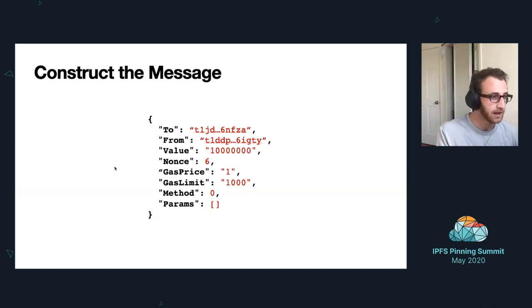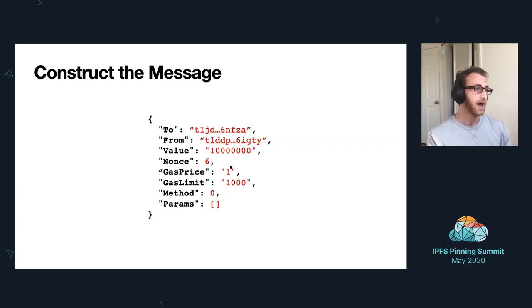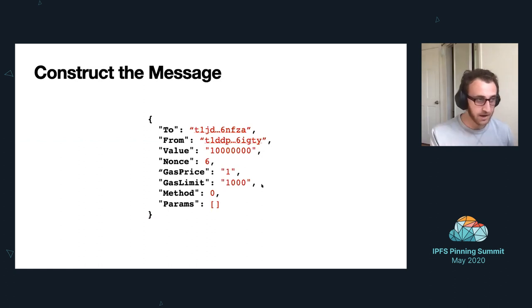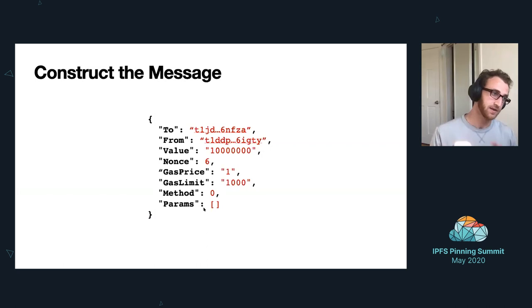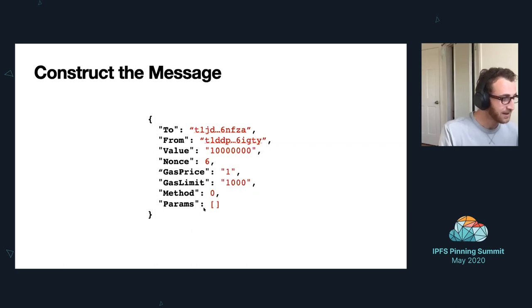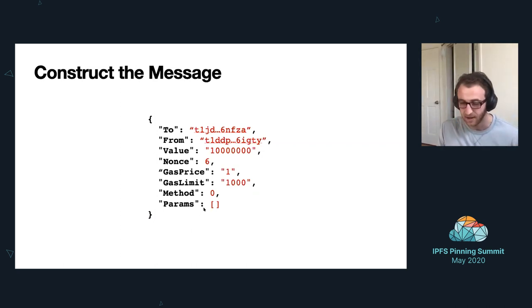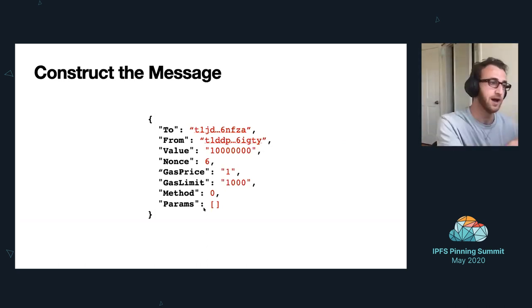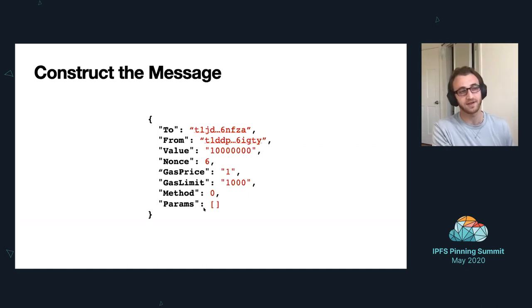When we construct the message, we take that nonce and plug it in. Here I'm sending 10 million attoFil at a gas price of one, willing to pay up to a thousand gas units for this transaction. The method and params for just sending Filecoin are always zero and empty. To answer how you receive Filecoin — you just plug your address into the 'to' field in a message. As long as your address is the 'to' field, you will receive whatever is in the value.